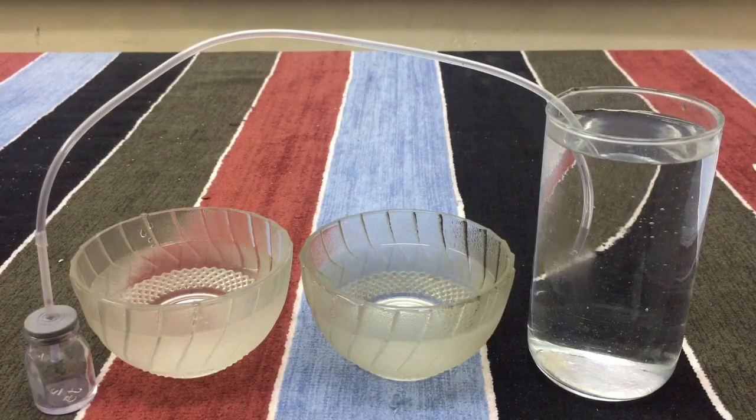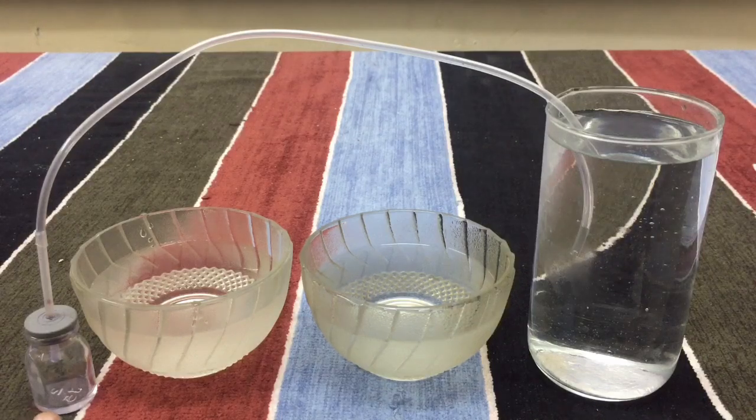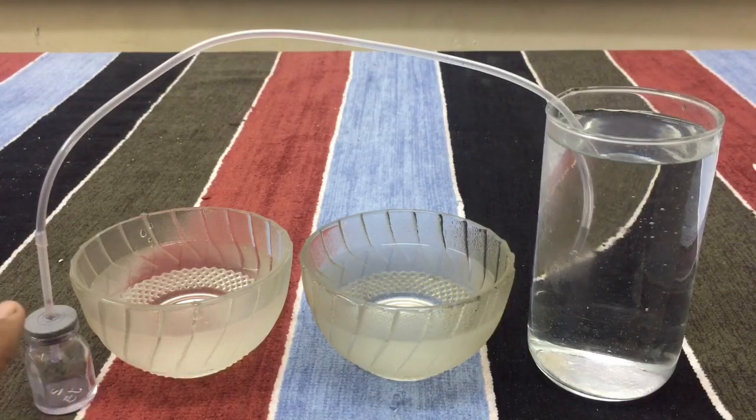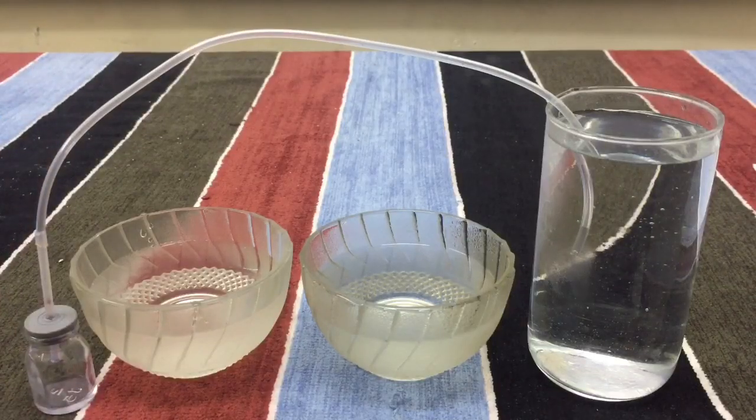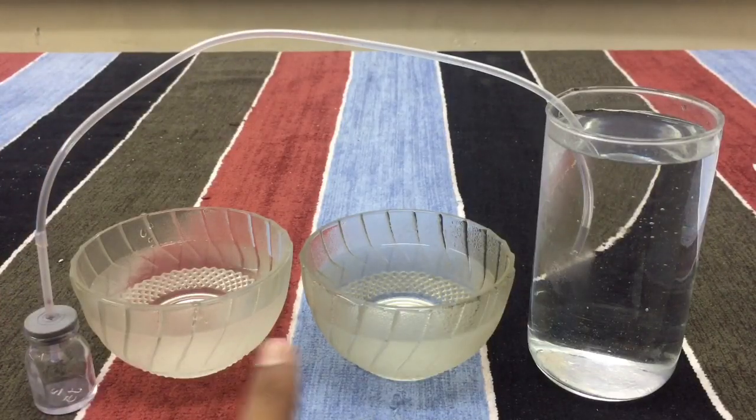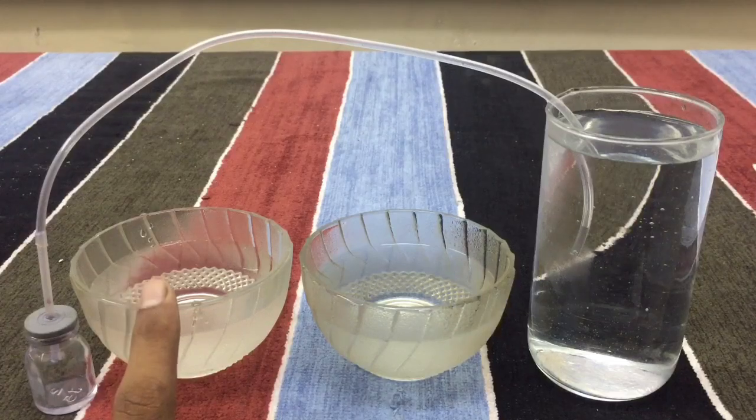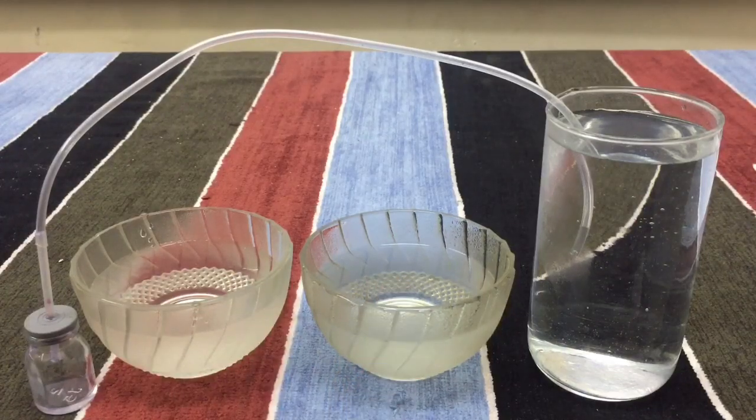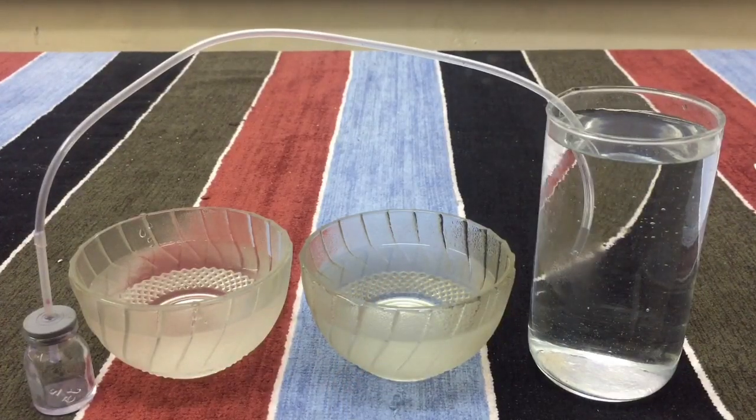All the material required for that are here. This is an empty glass bottle with a glass tube fixed to its neck in its rubber cork. And these are the two glass tumblers, one with cool water, one with hot water. And this is a glass of normal water.